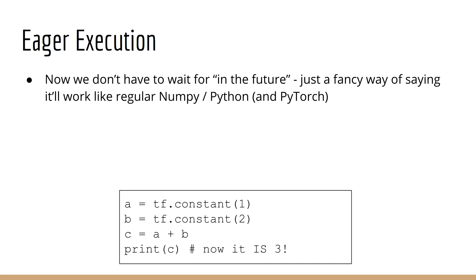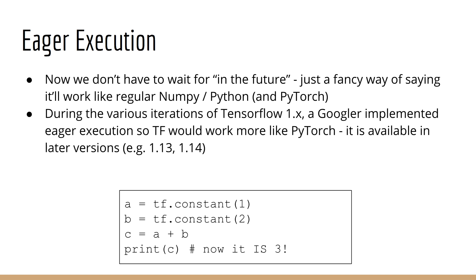So what happened was, as TensorFlow 1 was going through its various iterations, one bright young engineer at Google decided to implement eager execution so that TensorFlow could act more like PyTorch in regular Python. In the later versions of TensorFlow 1, like TensorFlow 1.13 and TensorFlow 1.14, eager execution is actually implemented as a feature. The thing is, you'd have to turn it on manually. But in TensorFlow 2.0, eager execution is on by default.